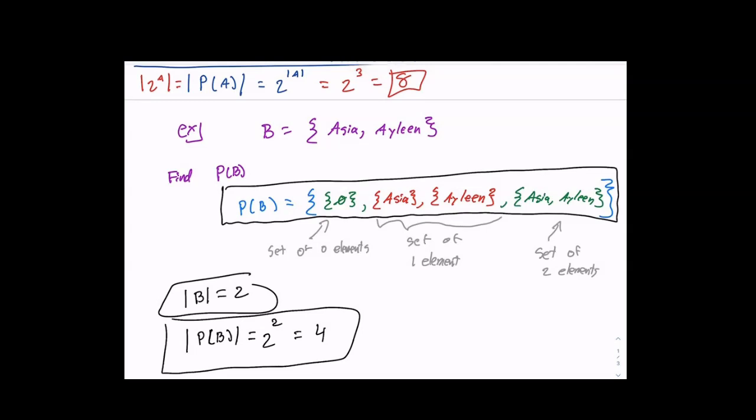That's everything for today. Your homework is based on these three types of questions: finding the power set, finding the cardinality of the original set, and finding the cardinality of the power set itself. The rest of class will be asynchronous so you can complete the homework and ask questions — it is posted on Google Classroom.